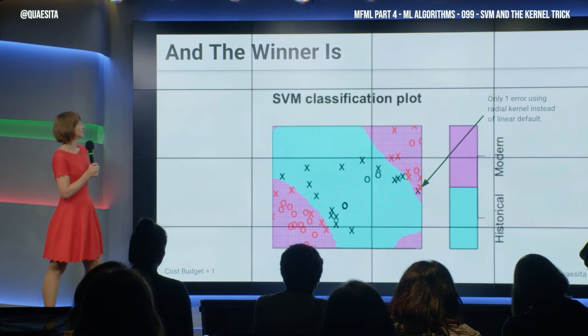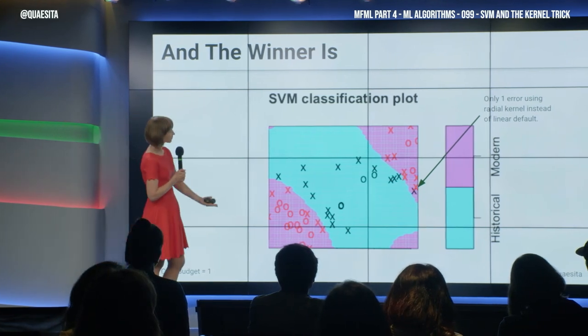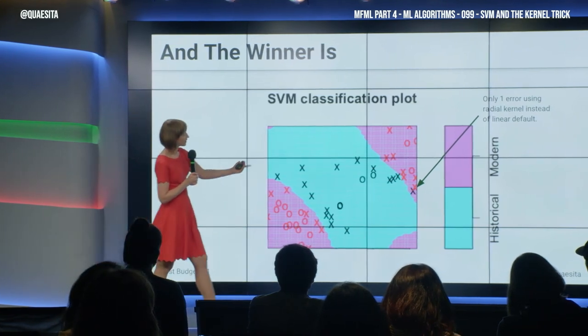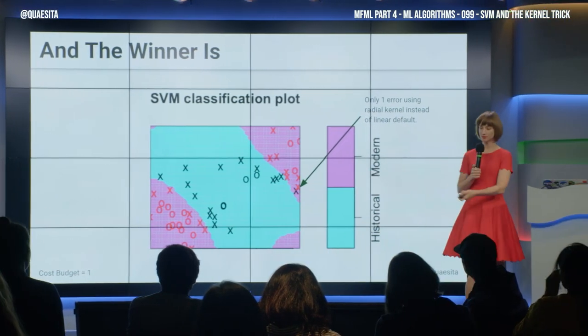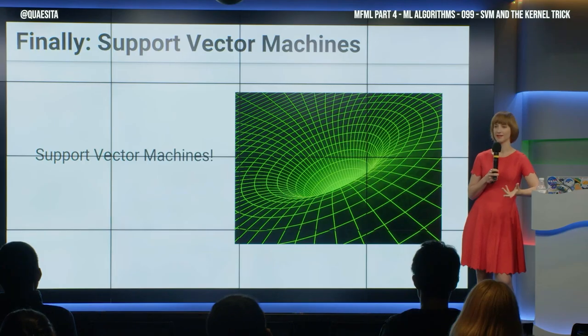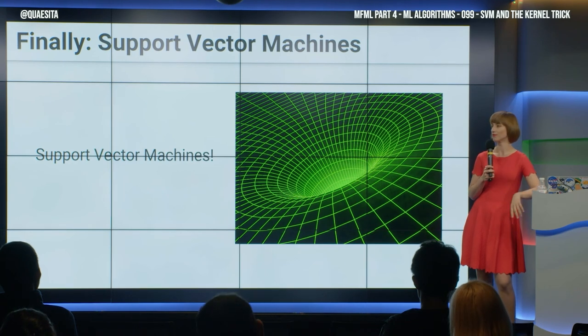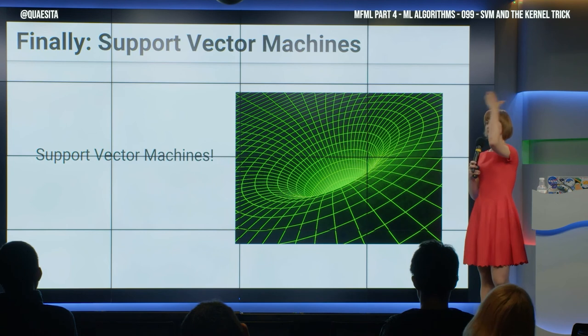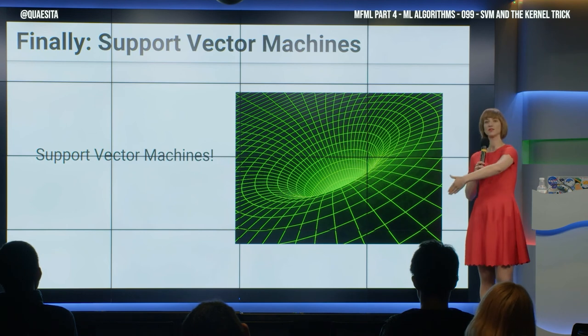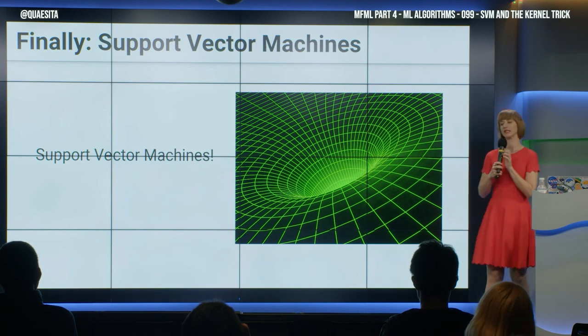And when we do an SVM plot in R, we can see that we have much better training performance — only one mistake. So that's our final method. We're like the Incredible Hulk: we punch the space because we get so frustrated, we add a dimension, we transform the original dimensions as part of doing that, and then we chop it still with a straight thing, project it back down, and call it done.